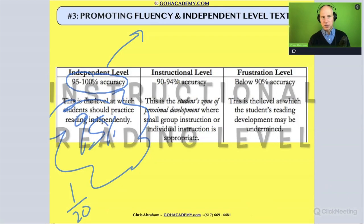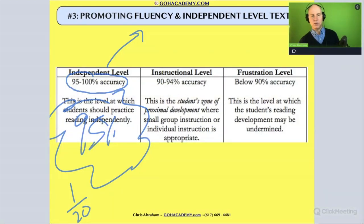Now, the second level is instructional level. We've mentioned this before. This is when they're between 90 to 94%, but let's say right now around 90%. So if they're around 90%,